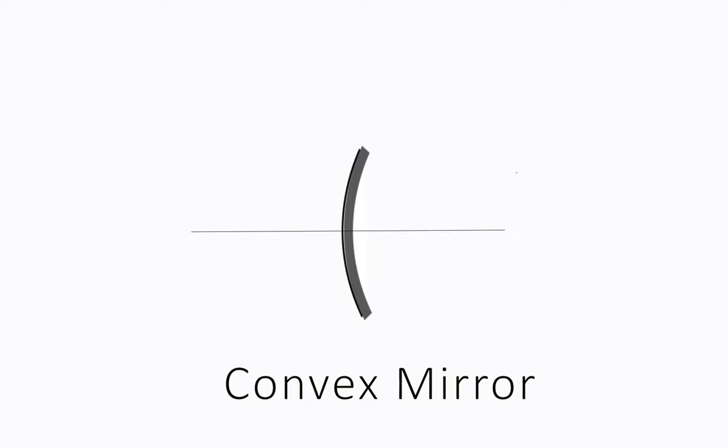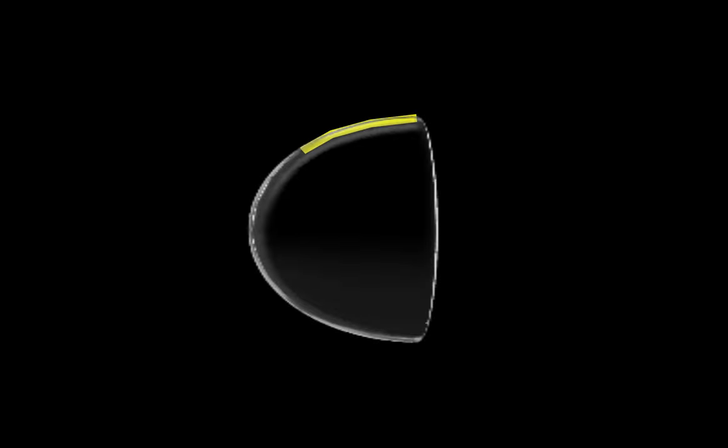Convex mirror, also known as a diverging mirror, has a reflective surface that is bulged towards the light source. If we paint the inner side of a hemisphere, it becomes a convex mirror where the outer part acts as a reflective surface.